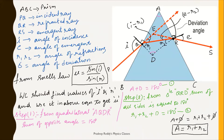We need to derive the equation for the refractive index of a prism in this session. We already know the refractive index using Snell's law: mu is equal to sine i divided by sine r.